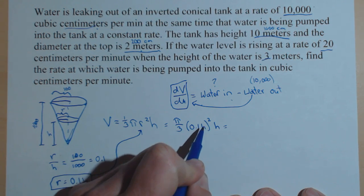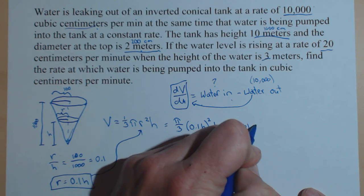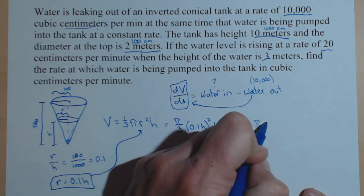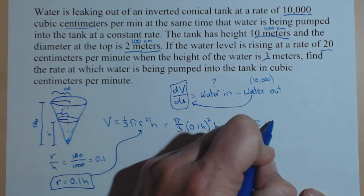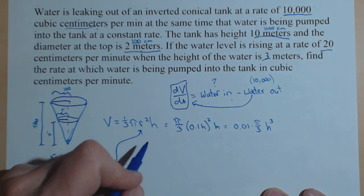And so, we're going to have the 0.1 squared, which is 1/100. So, 0.01 times the π over 3. And then, I have an h² times an h, which gives me an h³. I've got my relationship between V and h. Now, I can find my related rates.